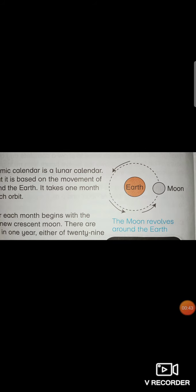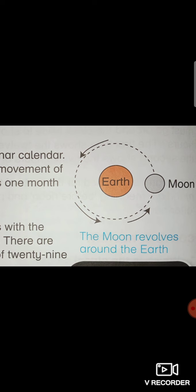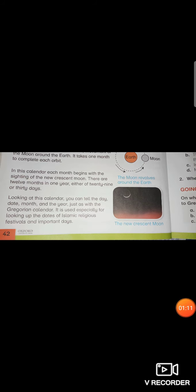And I also told you that Islamic calendar is a lunar calendar. It is based on the movement of the moon around the earth. It takes one month to complete each orbit. And this is how our Islamic month starts when we see a new moon.